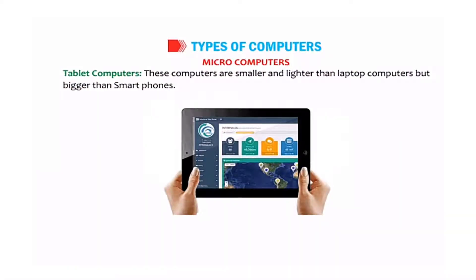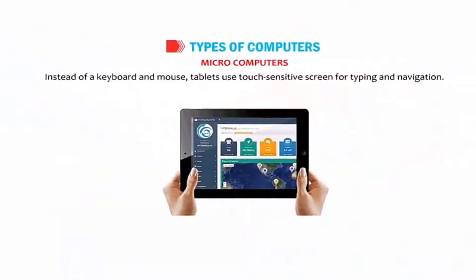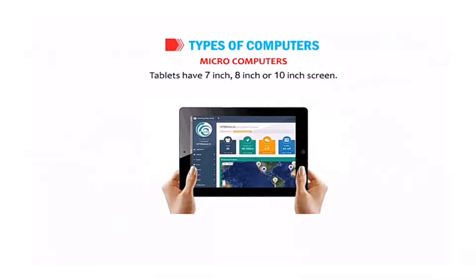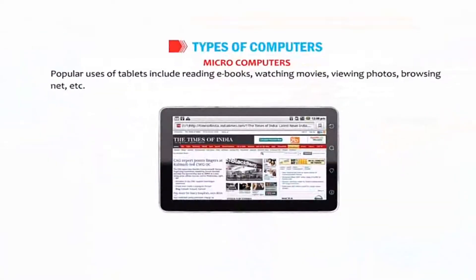Tablet computers are smaller and lighter than laptop computers but bigger than smartphones. In place of a keyboard and mouse, tablets use touch-sensitive screens for typing and navigation. Tablets are usually found with 7 inch, 8 inch or 10 inch screens. Tablets can be used for reading ebooks, watching movies, viewing photos, browsing the internet, etc.